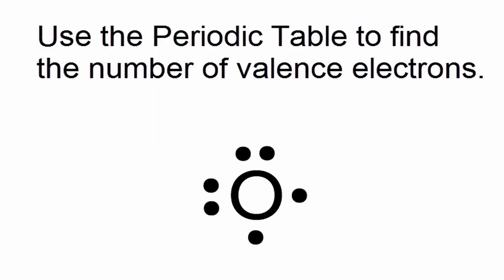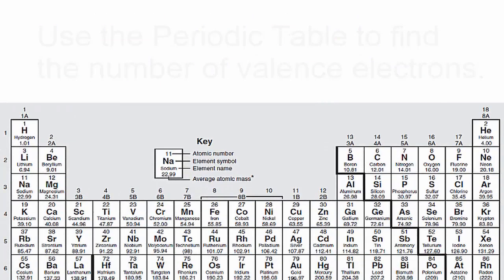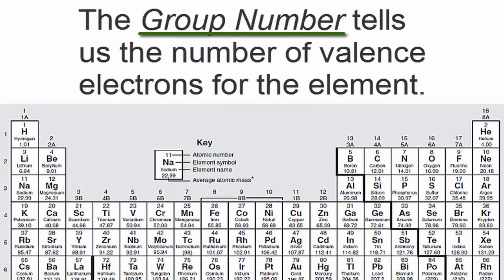We can find the number of valence electrons using the periodic table. The group number tells us the number of valence electrons for the element. For example,